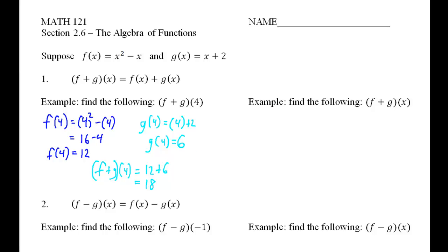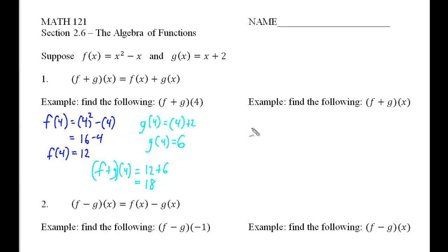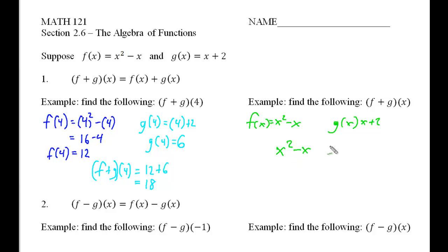Now, if we were to do this problem using just the letter x, my f of x is x squared minus x and my g of x is x plus 2. That would be taking this and this and adding them together. Just as I added 12 plus 6 to get 18, I can take this f of x and this g of x and add them together. You'll notice that to collect like terms, this x and this x will simplify to 0. So x squared plus 2 is my answer. And if I took my 4 and went 4 squared plus 2, that would give me 18.